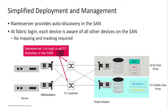Another key feature is the Name Server technology used in Fibre Channel. Each switch has a table that contains all of the details of all the nodes in the SAN. When it comes to zoning or setting up prioritization, everybody is aware of what is available to connect to in the SAN. There is no mapping and masking or per-port connections that need to be made like with other protocols. This greatly simplifies the deployment of the SAN and allows for a lot of automation in SAN orchestration.